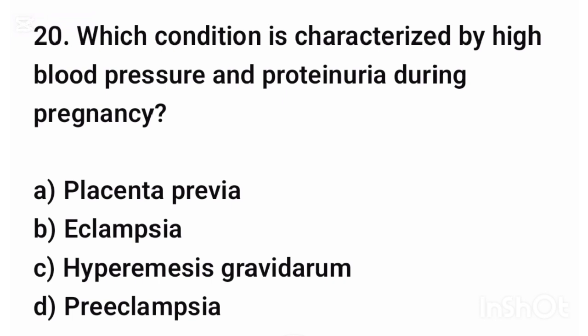Question number twenty. Which condition is characterized by high blood pressure and proteinuria during pregnancy? The correct answer is option D.